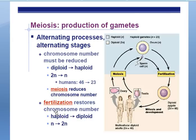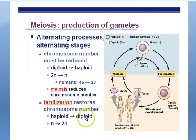Fertilization restores the chromosome number. We take the haploid sex cells — the gametes, the sperm and egg — fuse them together, each one having one set of chromosomes, and once the sperm and egg fuse together to form one cell, we're back at a diploid cell, or two sets of chromosomes, for a total of 46.